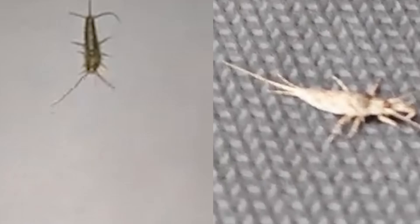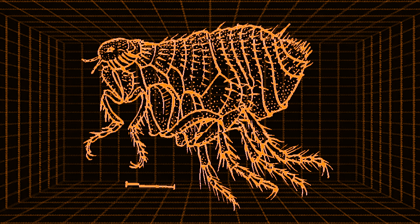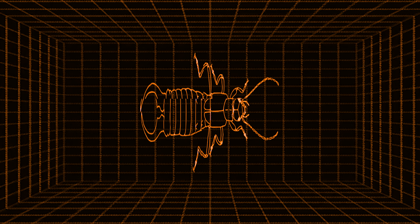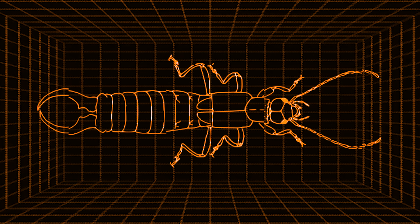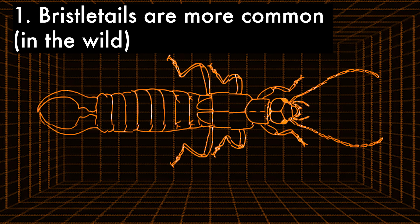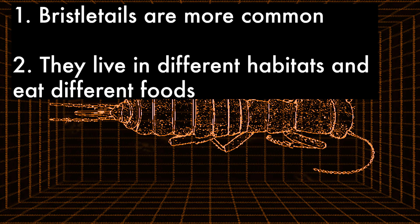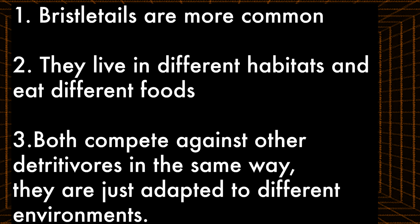To elaborate on the point made in the last video, these insects are ancient — even more ancient than silverfish — and the key to their longevity is the food these animals consume. However, there is something important to take into account when comparing silverfish and bristletails. Bristletails are more common than silverfish, although it might seem the opposite due to how much silverfish invade homes. Silverfish exist where bristletails don't, on the pure basis that they're less agile and more vulnerable to predators. What this means is that the point made in the last video is still true, but much more true for bristletails than for silverfish.